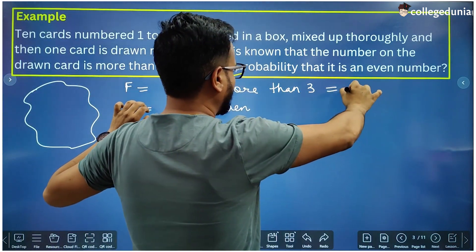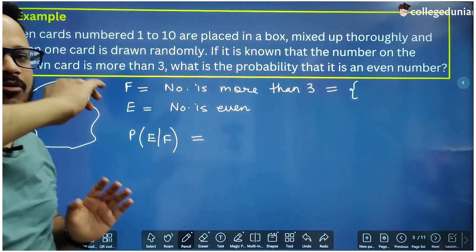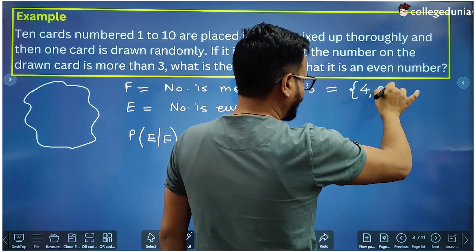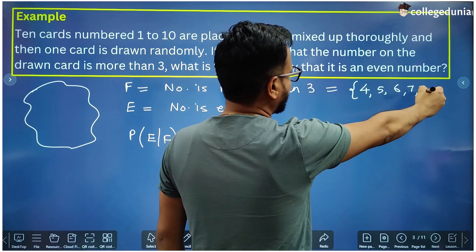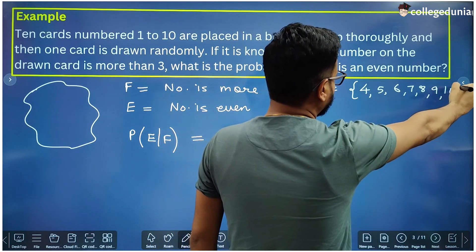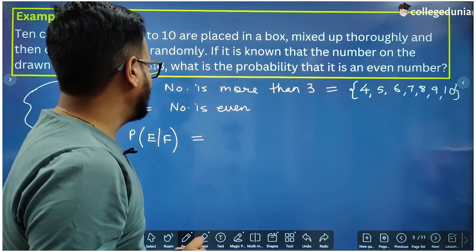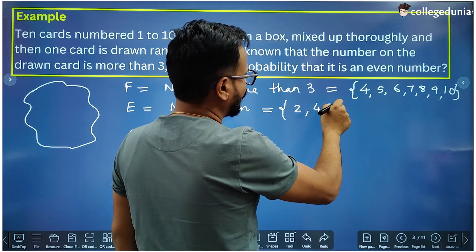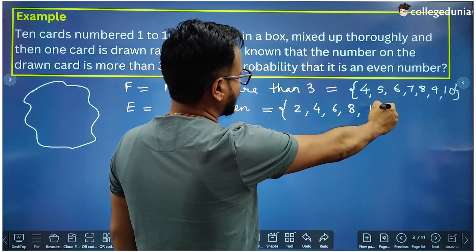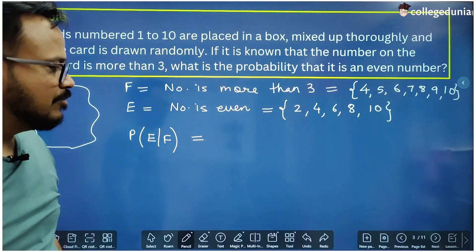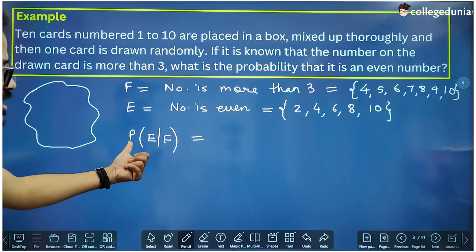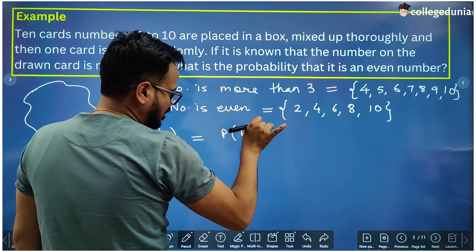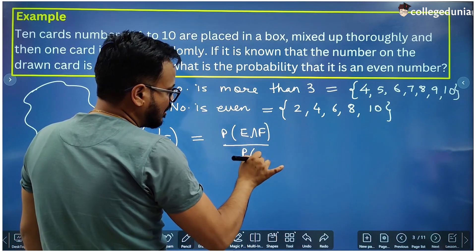Numbers from 1 to 10 form the sample space. Set E (even numbers): {2, 4, 6, 8, 10}. Set F (numbers more than 3): {4, 5, 6, 7, 8, 9, 10}. The conditional probability of E given F is P(E ∩ F) divided by P(F).